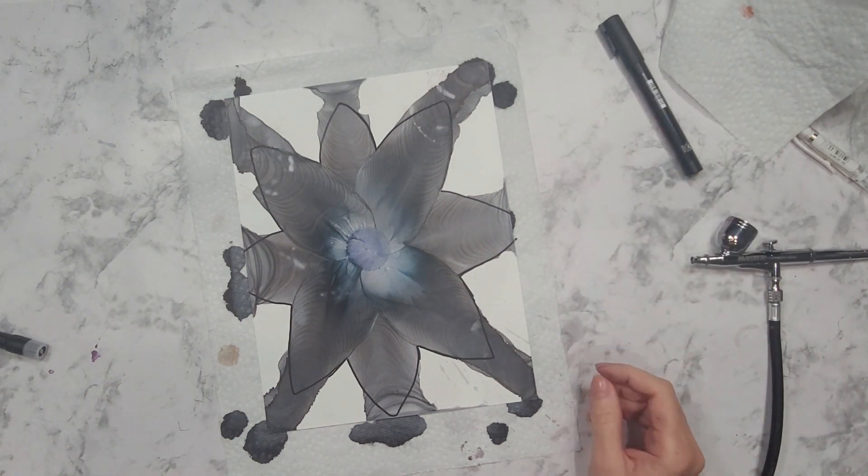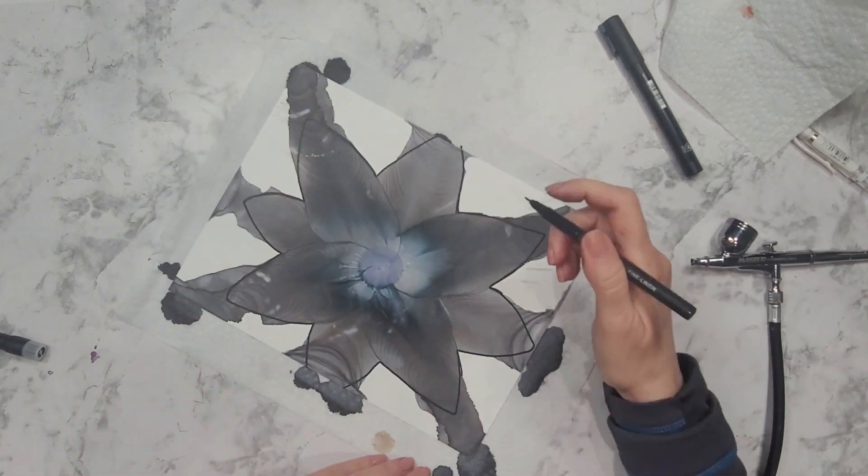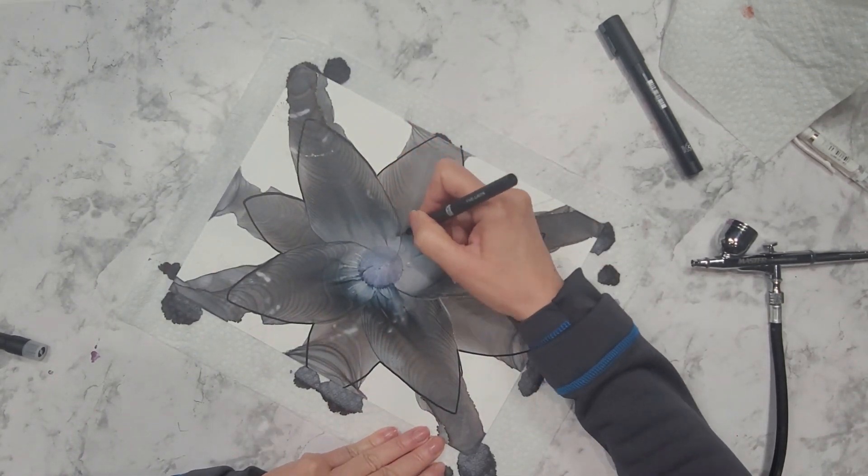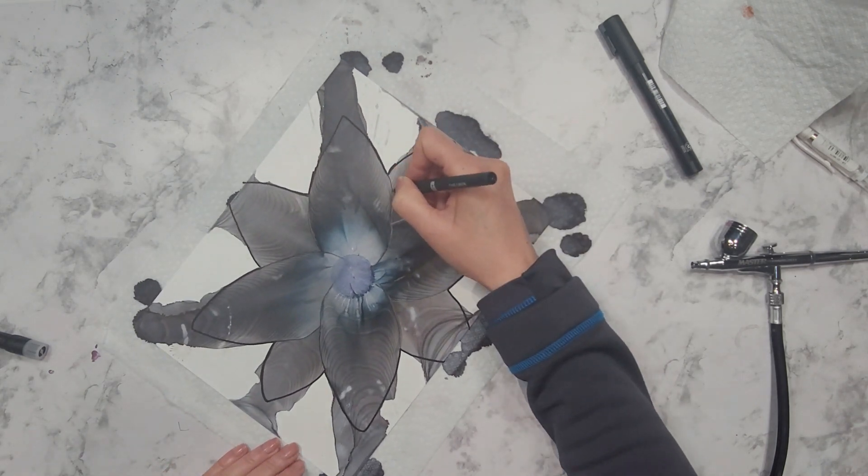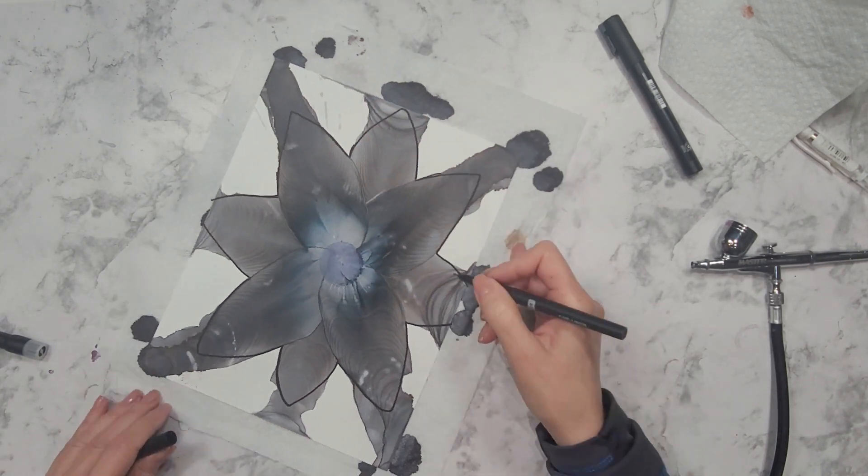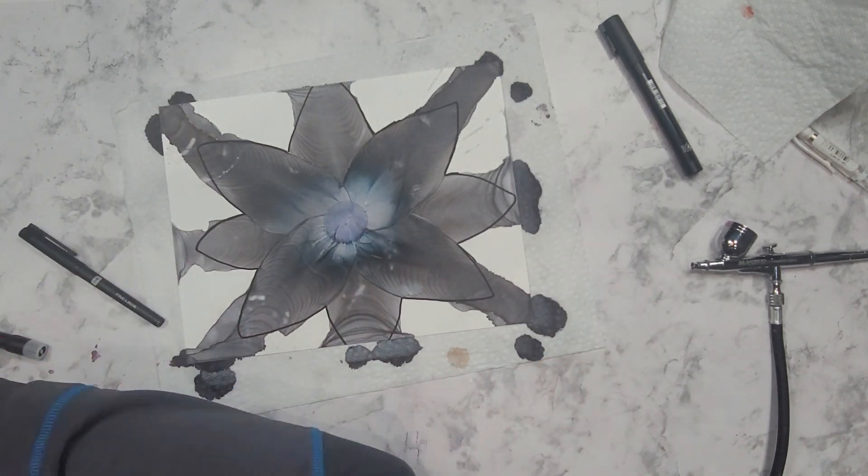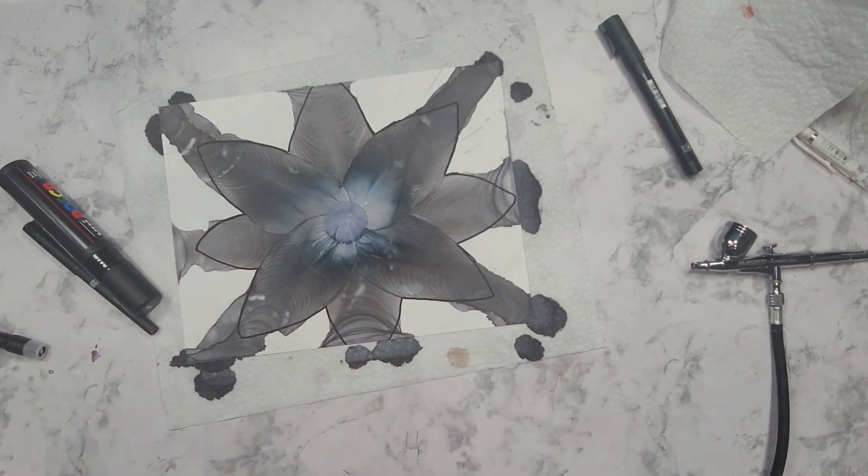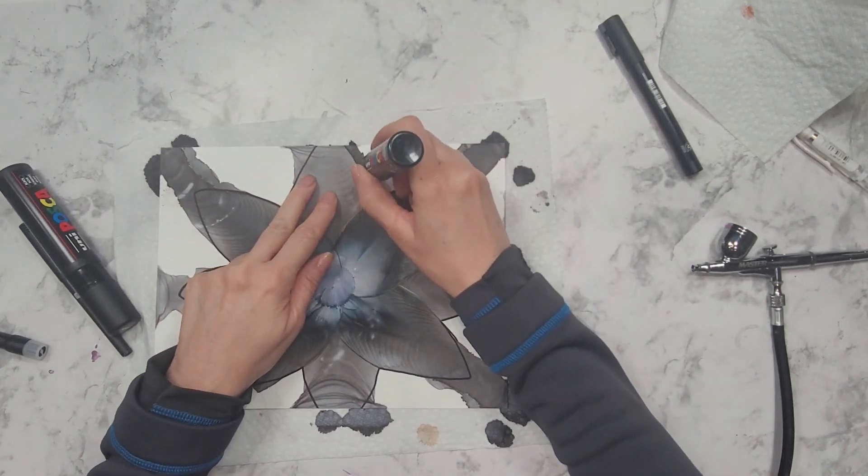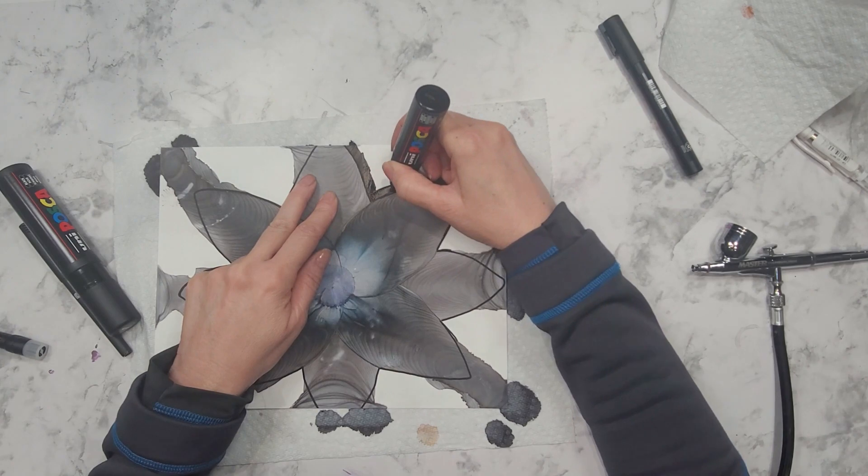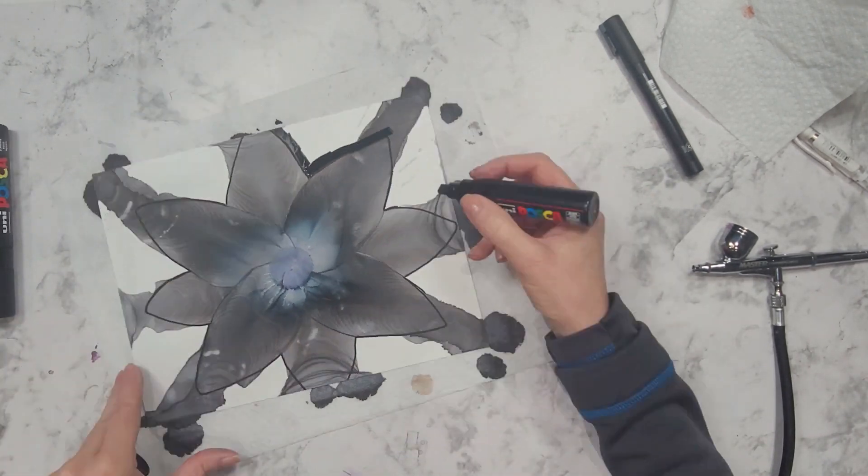I could have blown out more petals, but because the airbrush was spitting out water, I decided to stop. Now here I'm using a black fine liner to go over the shape of the petals and define them a little bit more so that they don't blend one into the other. This Posca pen has a nice broad tip and I'm going to use this one to outline a little bit better.